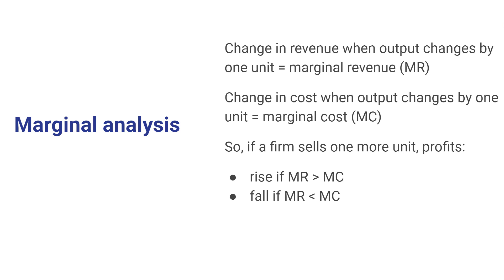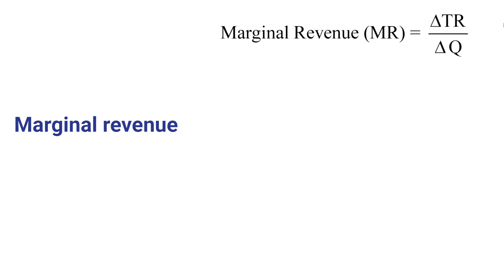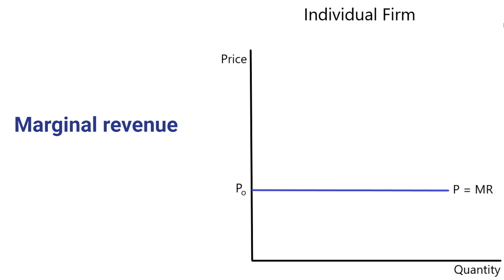This is the decision rule: if the additional revenue is more than the additional cost, the firm will produce more; if the additional revenue is less than the additional cost, it would be better off producing less. If marginal revenue just equals marginal cost, there would be no change in profits. In the special case of a perfectly competitive market, the additional revenue from selling one more unit is simply the price of that output — so marginal revenue equals price. This means the marginal revenue curve is the demand curve facing a perfectly competitive firm, and it's horizontal, or perfectly elastic, at the prevailing market price.